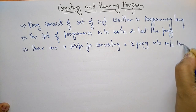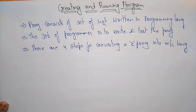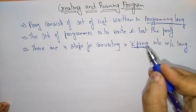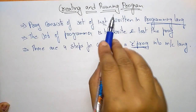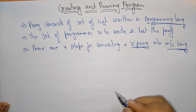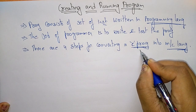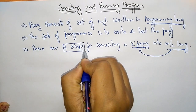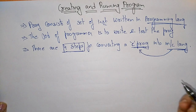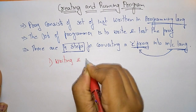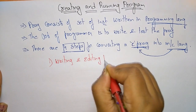To create a program, it is written in a programming language such as C. After creating the program, we have to run it. Running the program requires converting it into machine-level language. For creating and running the program, four steps are required. The first step is writing and editing the program, which is done in a text editor.